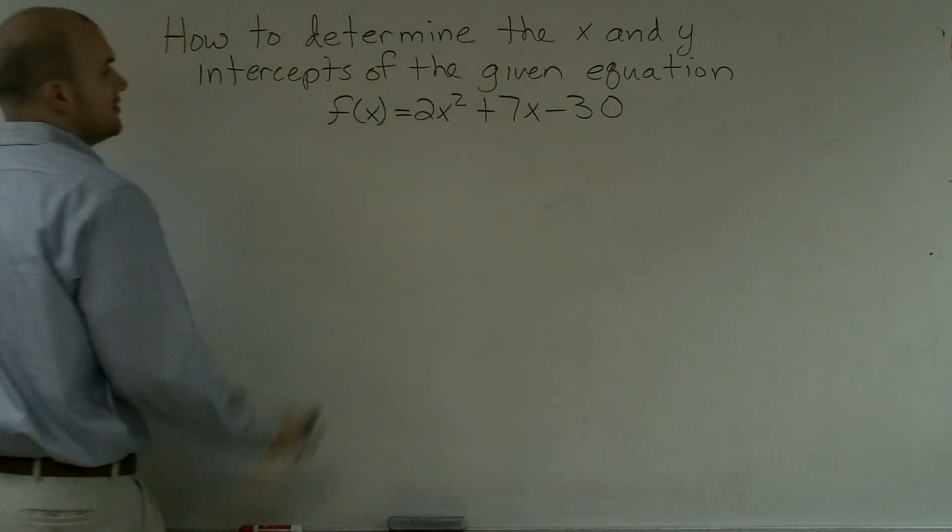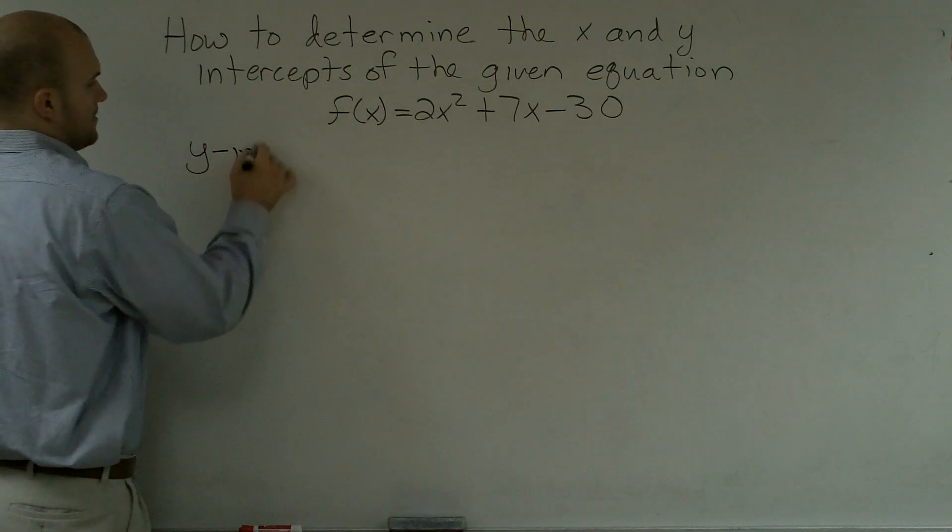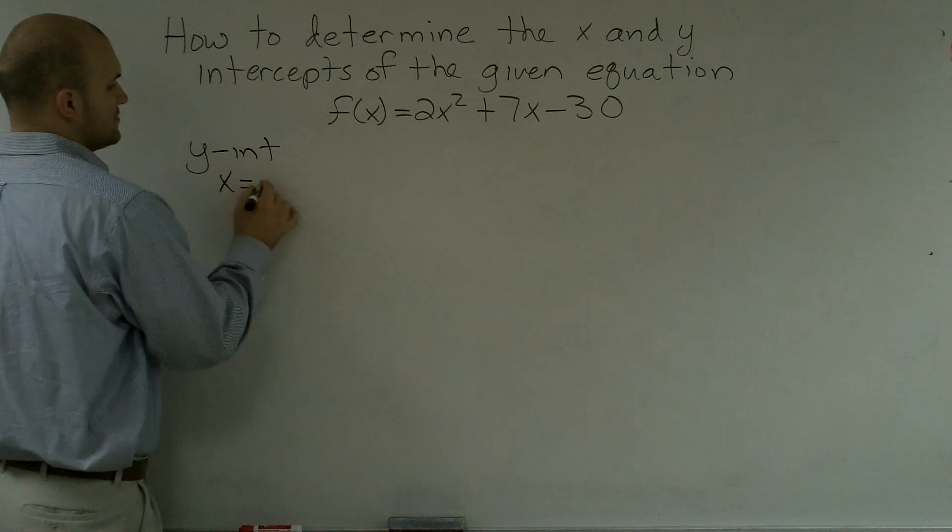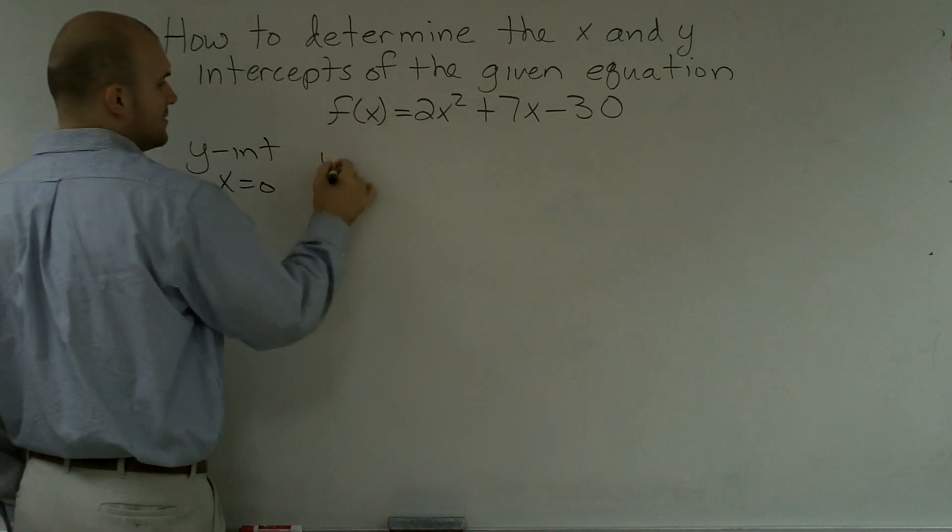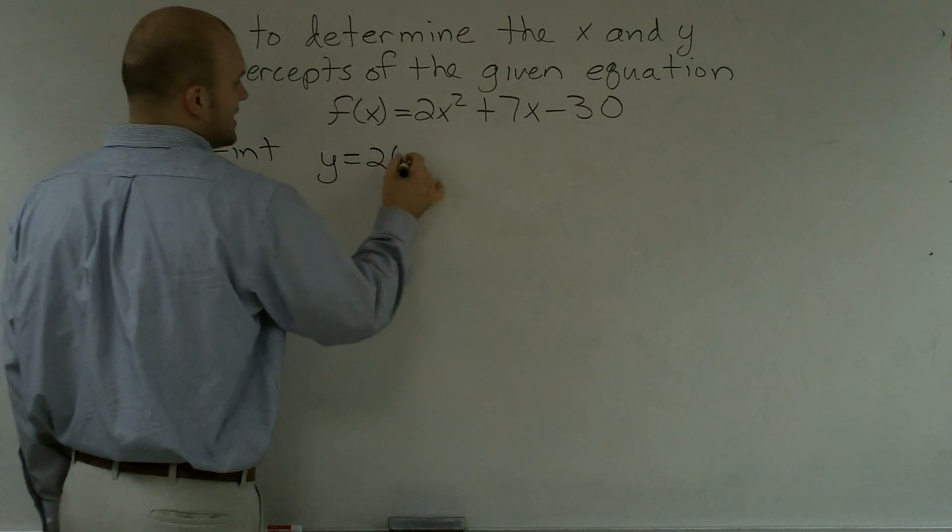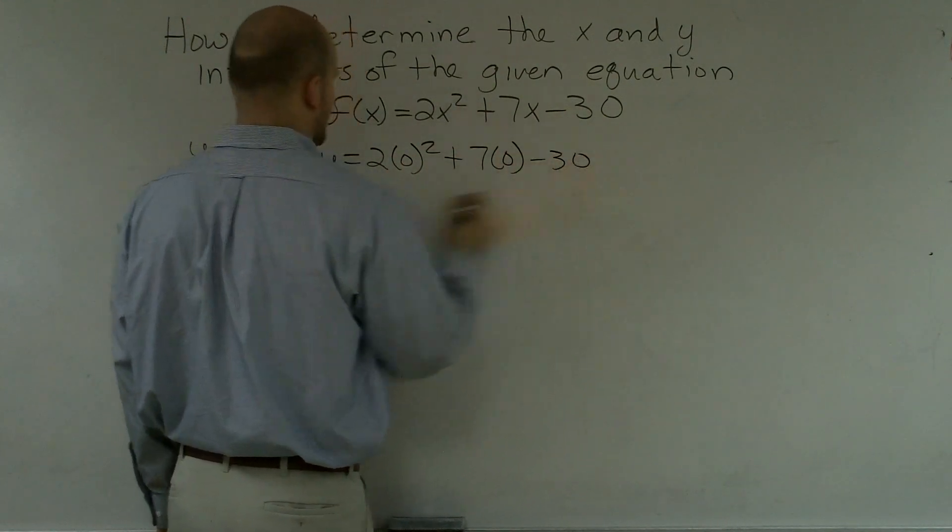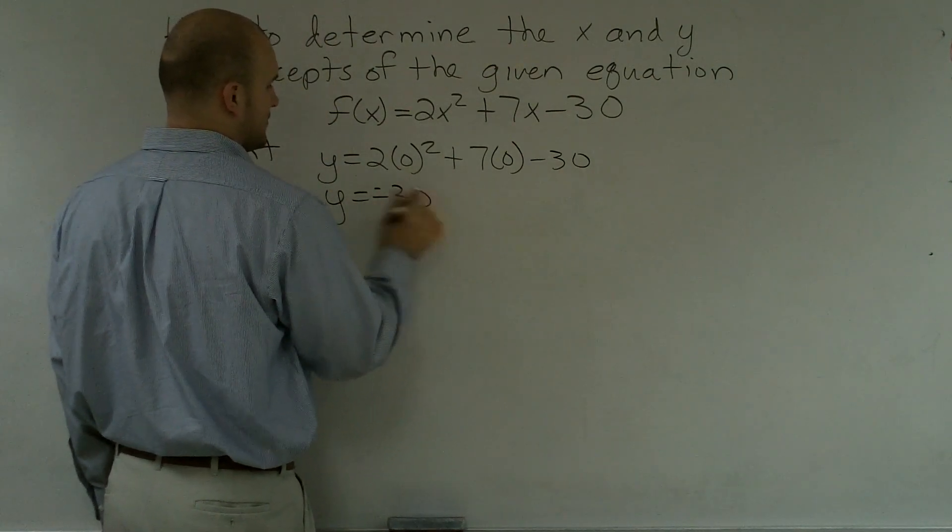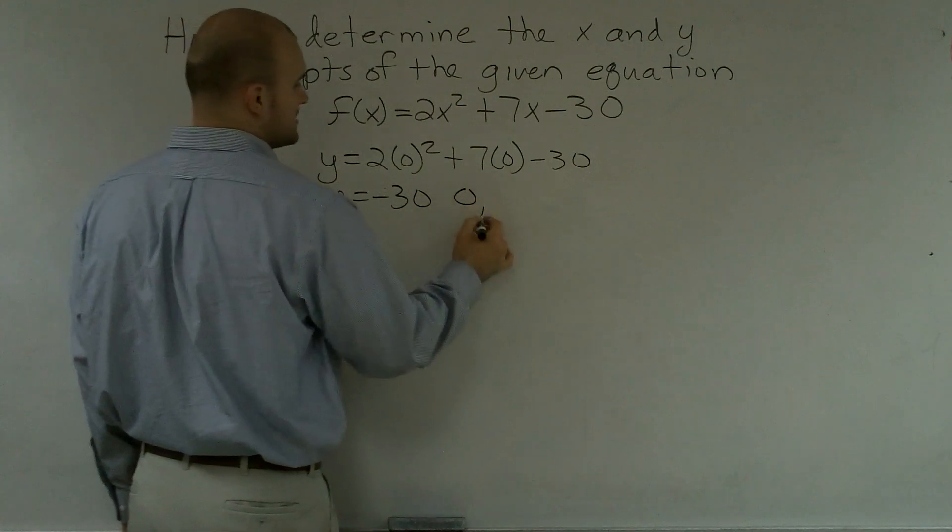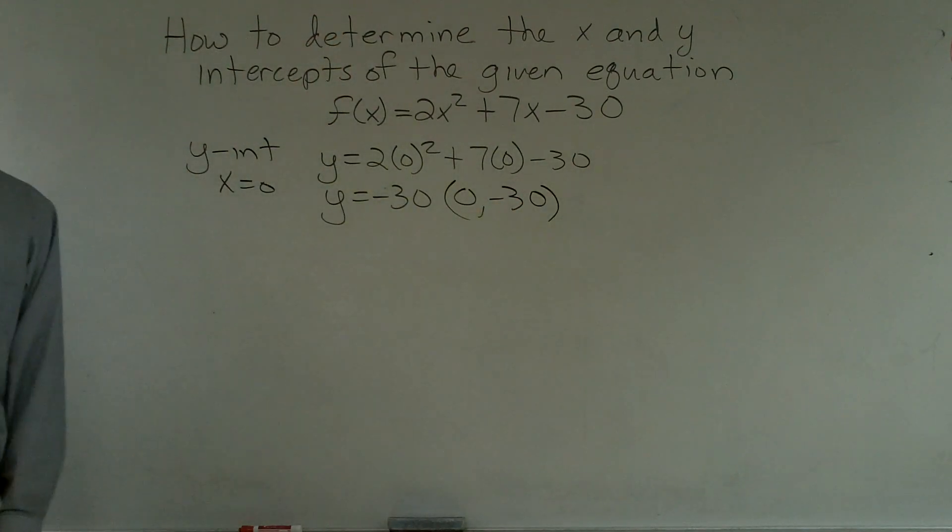So first one is the easy one. If I want to find the y-intercept, that means x equals 0. So instead of using f(x), I'm going to use y. So y equals 2 times 0 squared plus 7 times 0 minus 30. Y equals negative 30. Therefore, my point is 0, negative 30. Really that simple.